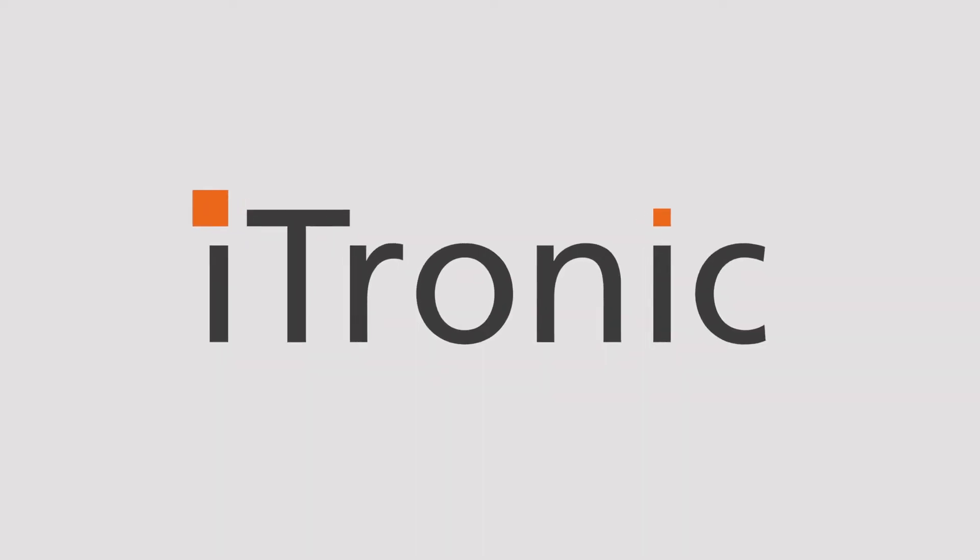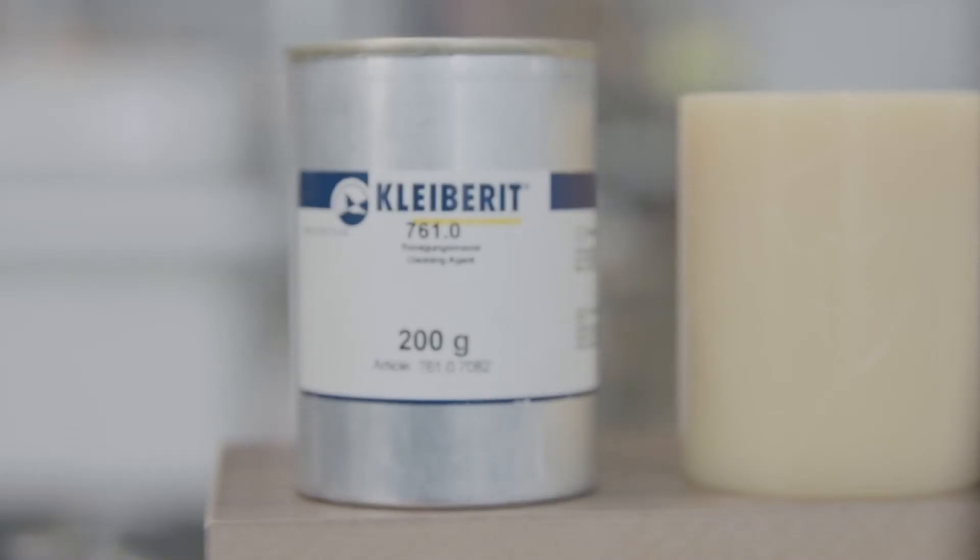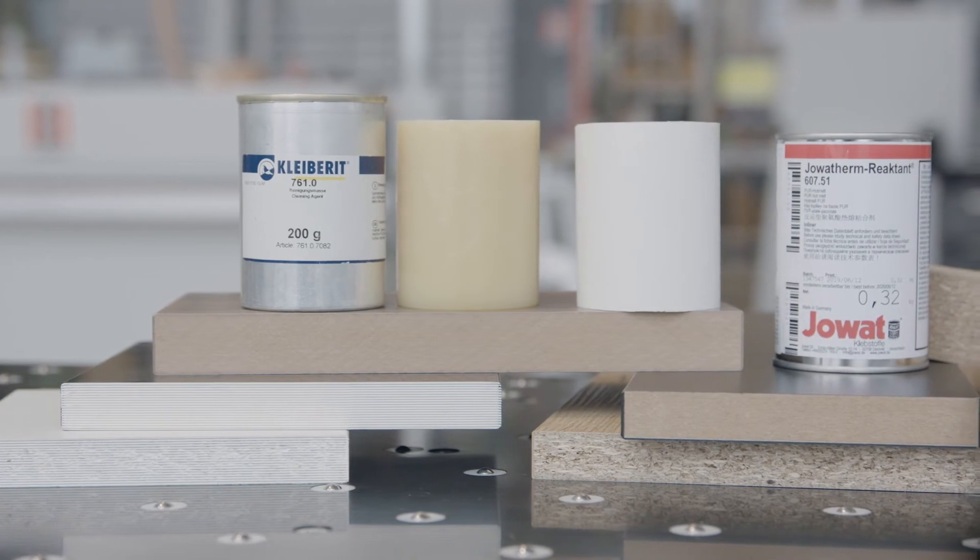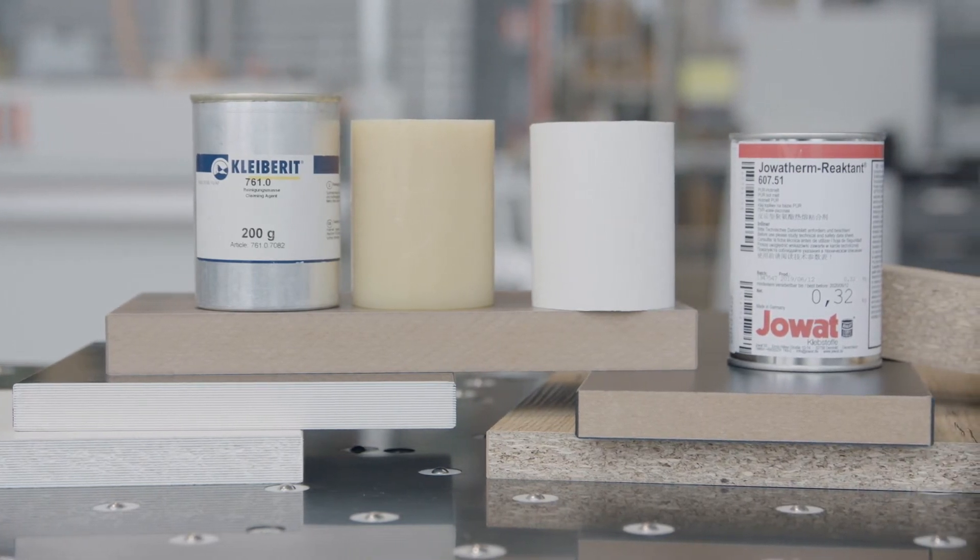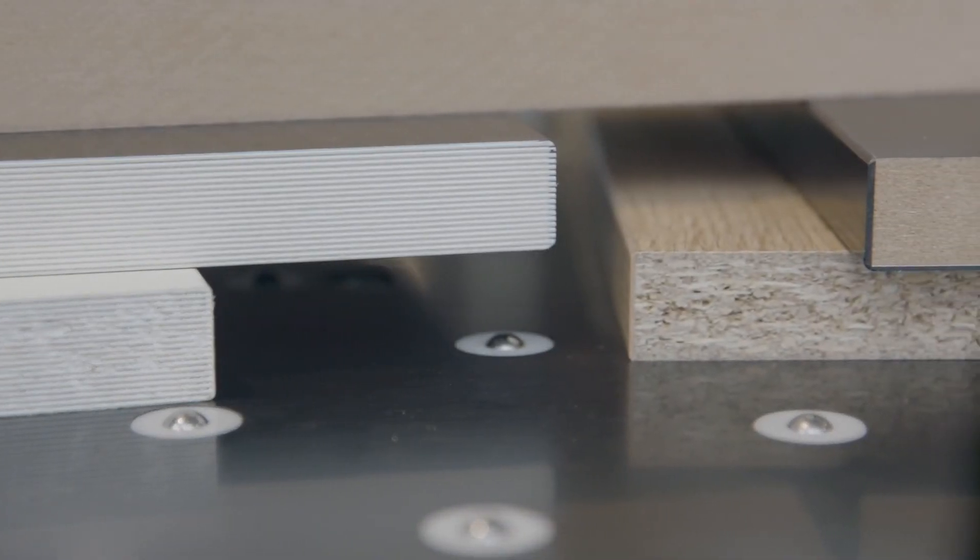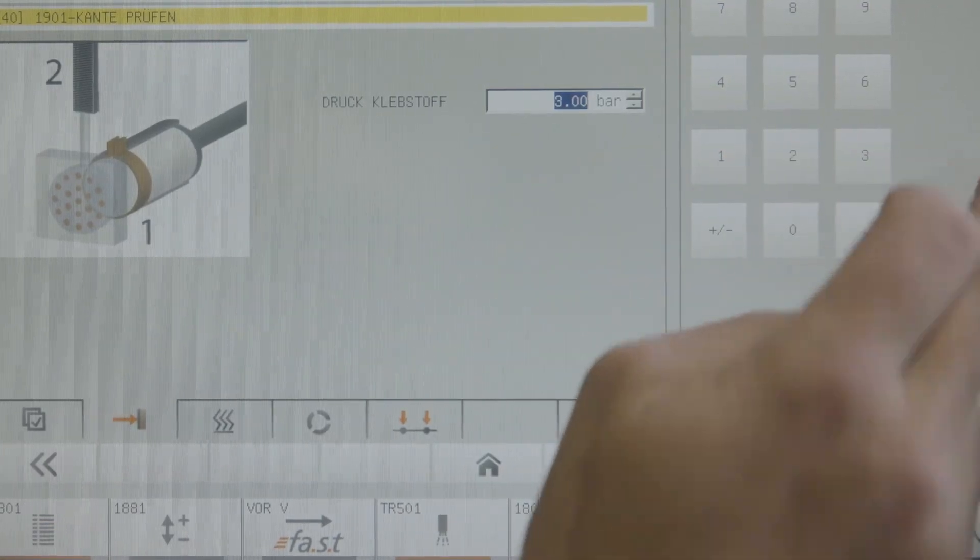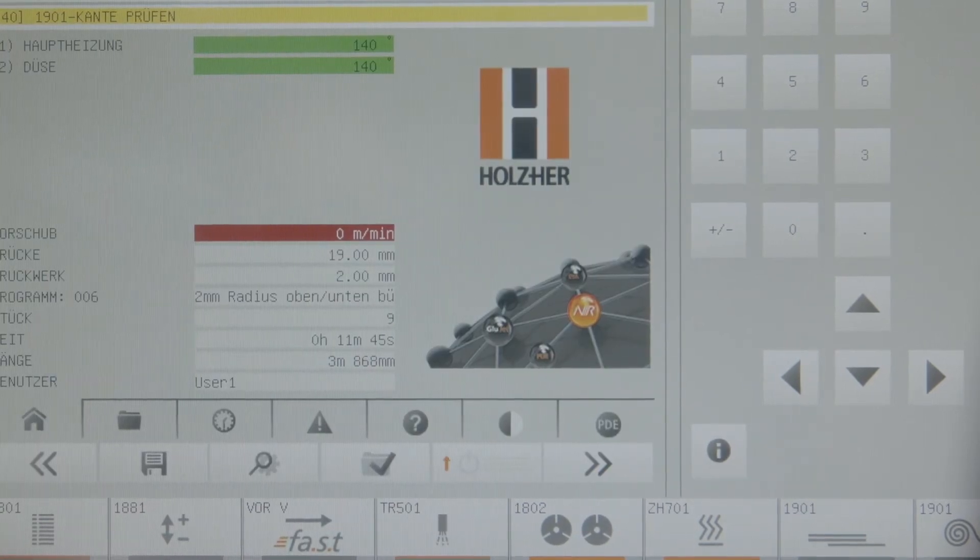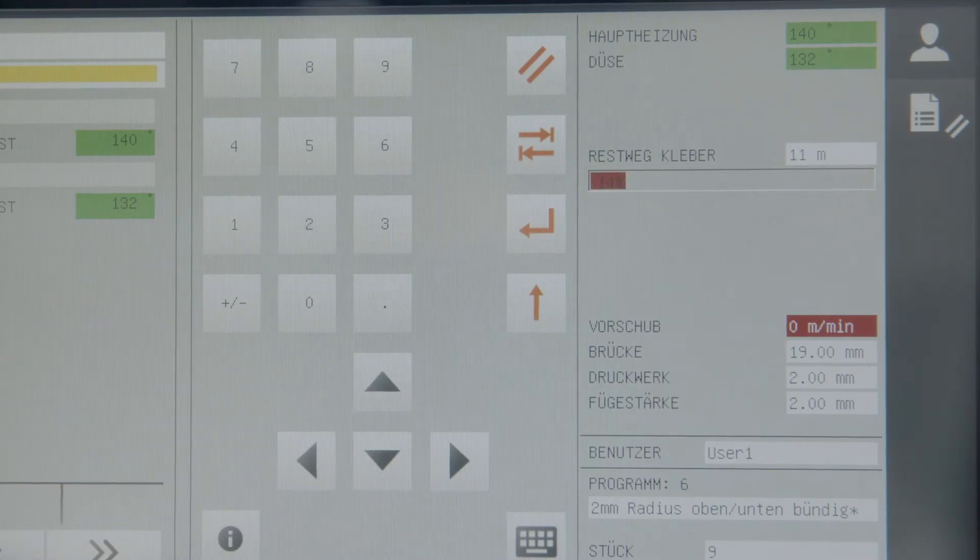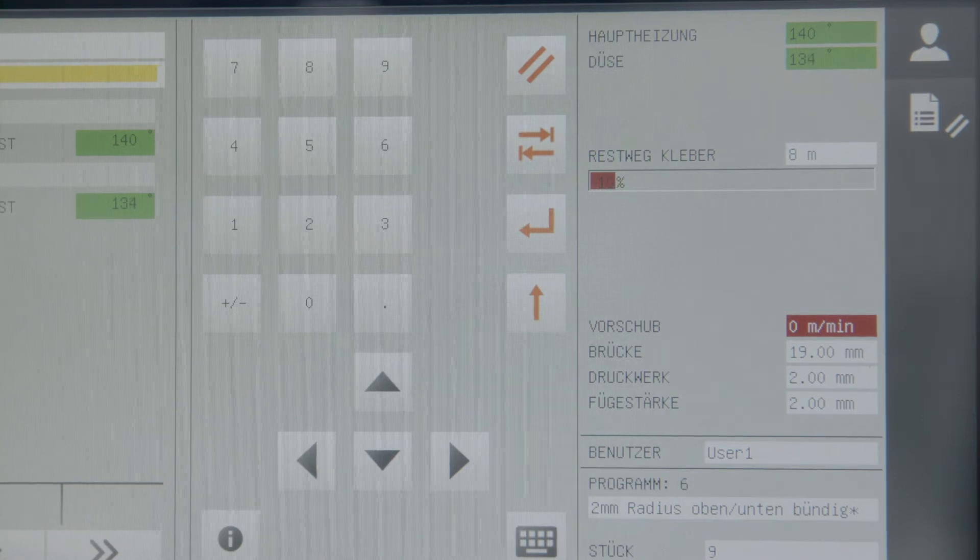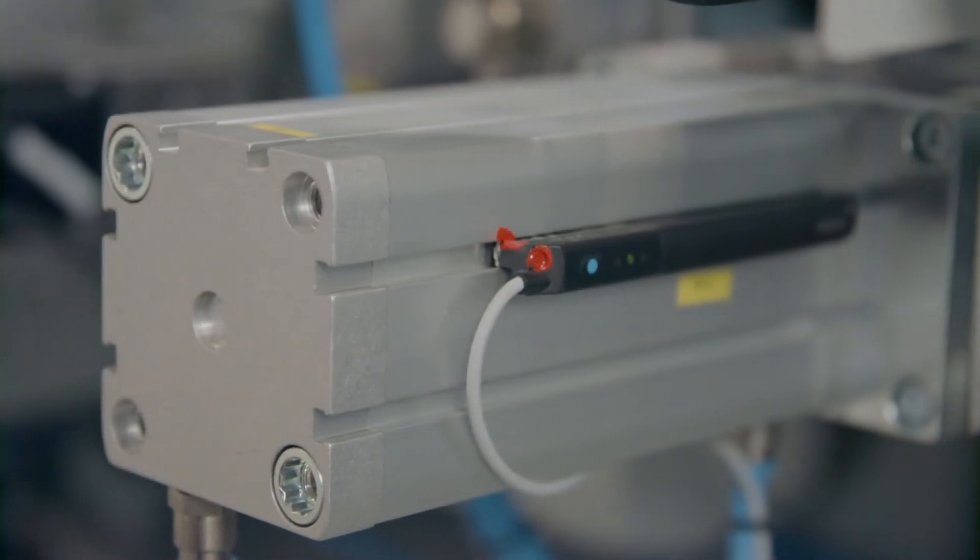With iTronic, an automatic glue quantity control is also available. The amount of adhesive for MDF and chipboard or for different board thicknesses or types of adhesive can be perfectly dosed according to requirements. The residual adhesive quantity display shows you what is still possible at any time. Residual amounts of PUR can be used in a controlled manner before the start of the rinsing cycle and do not have to be rinsed out.